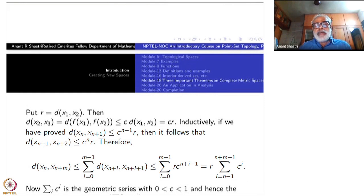So distance between x_2 and x_3 will be less than or equal to c times r. What happens to distance between x_3 and x_4? One more c will come. So what happens is inductively distance between x_n and x_{n+1} will be less than or equal to c^n times r. Then it follows that distance between x_n and x_{n+1} is less than or equal to c^{n+1} times r. Once you have proved this one, therefore, if you look at distance between x_n and x_{n+m}, we are trying to prove that this is a Cauchy sequence.